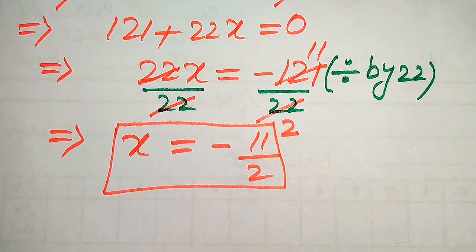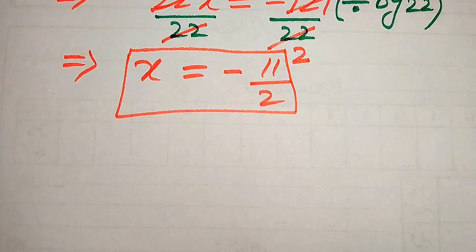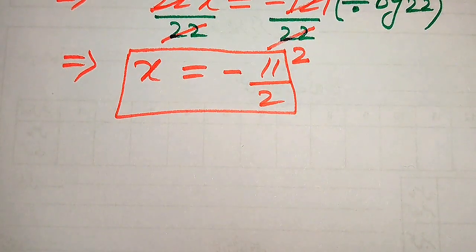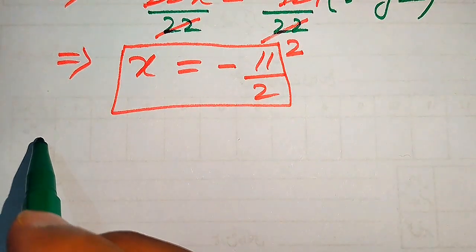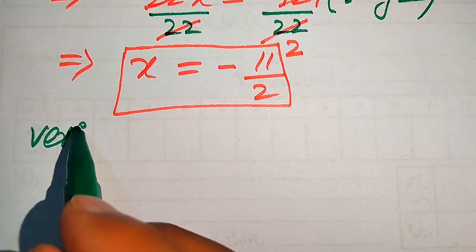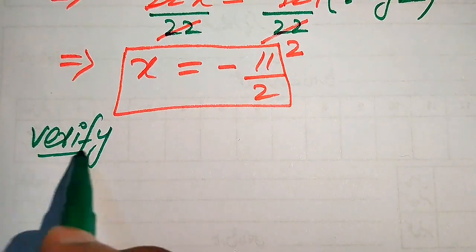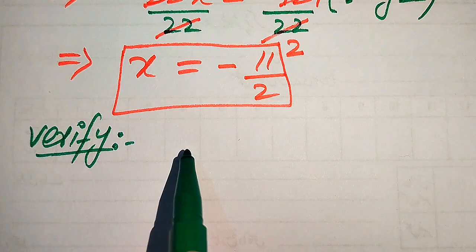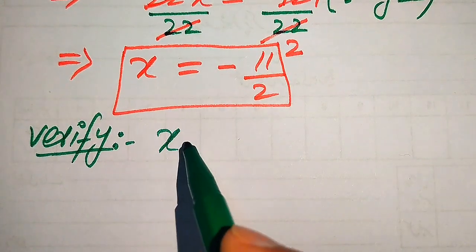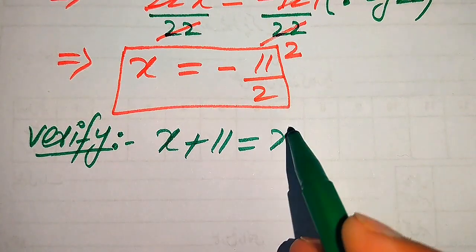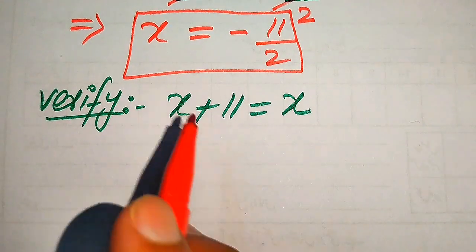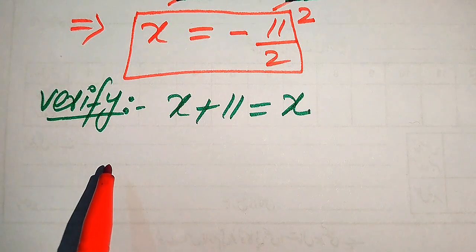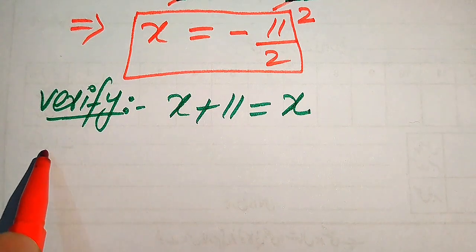This is the final root obtained from the first method. Now we need to verify this root and check whether it satisfies the original equation or whether it is an extraneous root. We copy down the original equation: √(x + 11) = x, and substitute x = −11/2 on both sides.